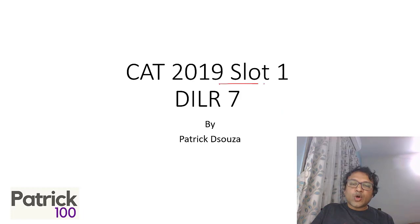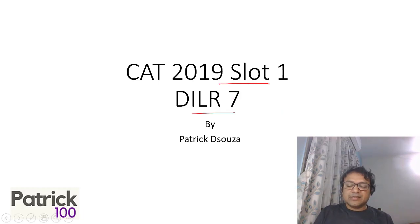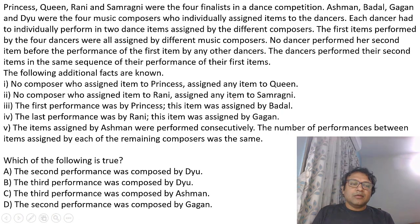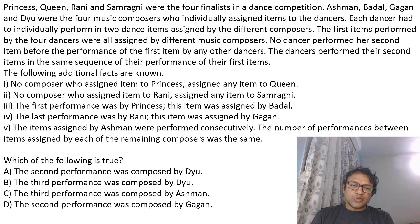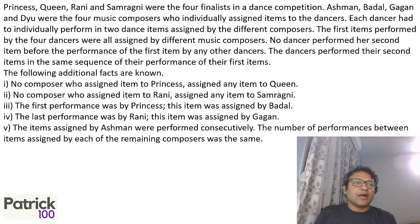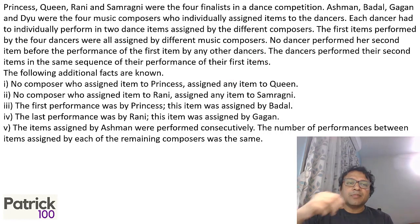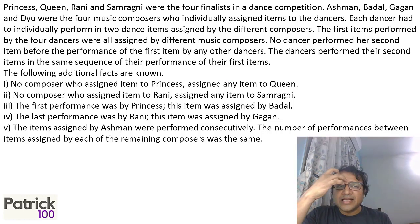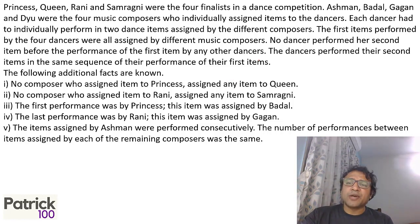You are looking at CAT 19, Slot 1, DLS 7 sets. Try solving on your own before you look at the solution. I'll anyway try to solve the set. The Princess, Queen, Rani, and Sam were the four finalists for the dance competition.